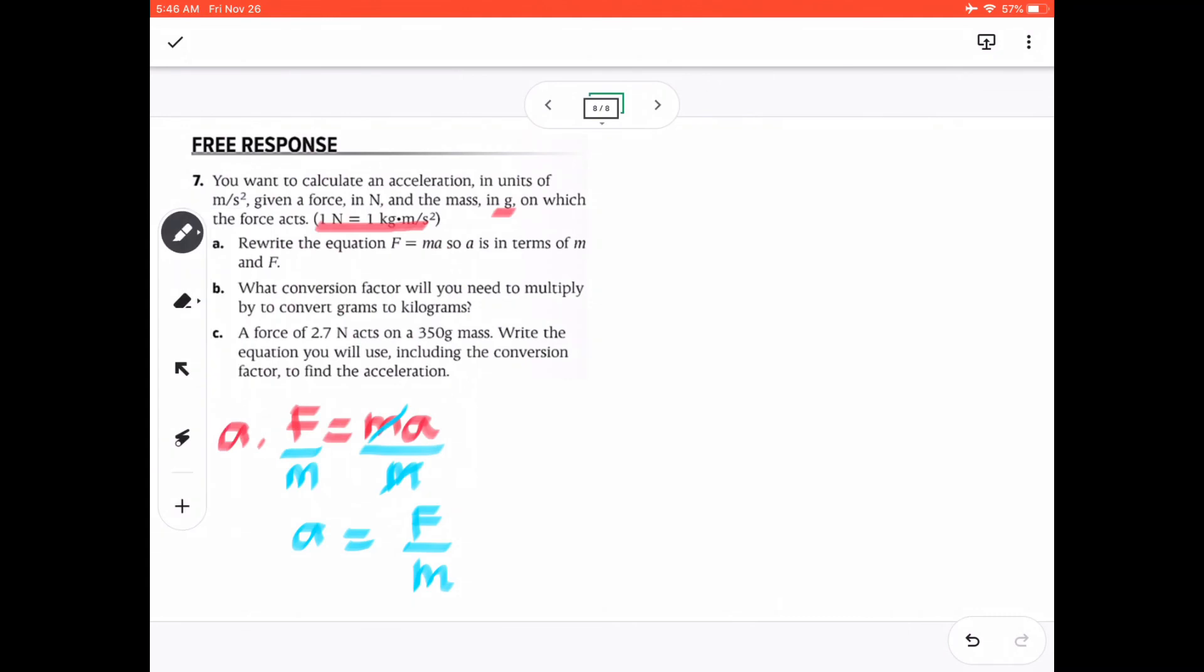So how about question B? Question B over here. What conversion factor will you need to multiply by to convert grams to kilograms? In this case, if for example you have grams, what conversion factor will you want to multiply this with? So we will get kilograms. We're going to multiply it by gram and kilogram. Which one is bigger? Kilogram is bigger. So one kilogram is equal to 1,000 grams. So your conversion factor is actually this one. This is your conversion factor.